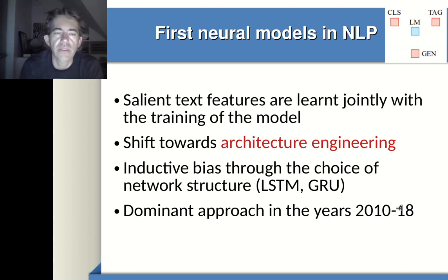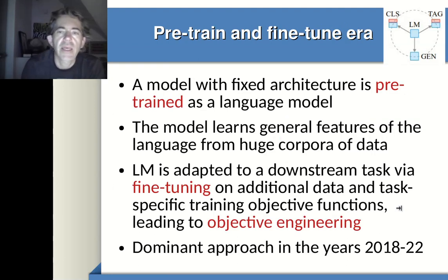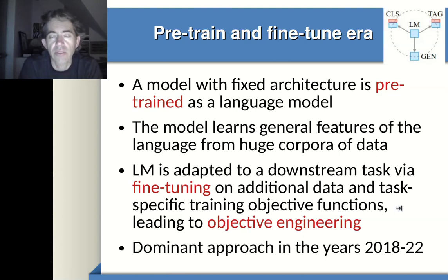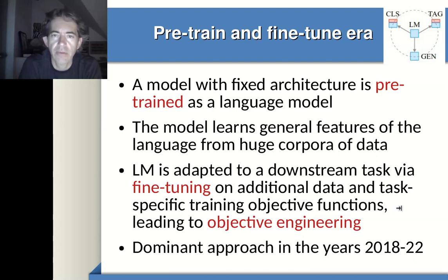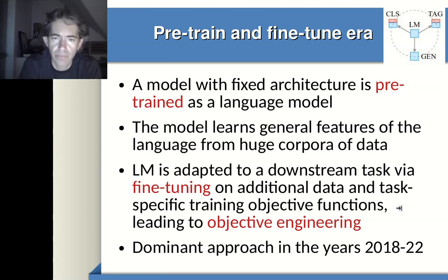We all know what happened in 2018 — the transformer model was created. That was yet another paradigm shift. The idea was: let's not experiment with different architectures. Let's have just a single architecture that can be used to pre-train a large model — specifically a language model. The language model, as you know, is a specific type of model that generates in an auto-regressive manner. It gets a sequence of tokens as input and generates other sequences of tokens, modeling the language by predicting the next token based on previously seen tokens.